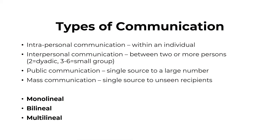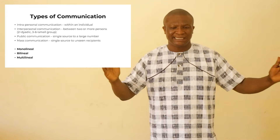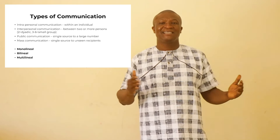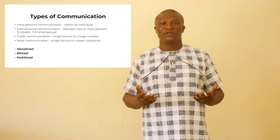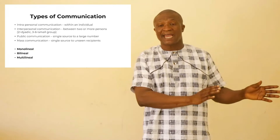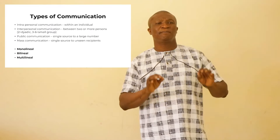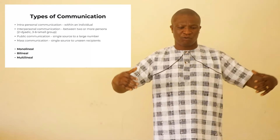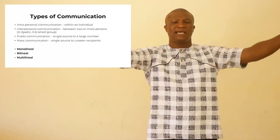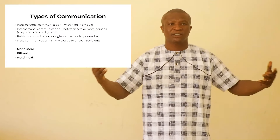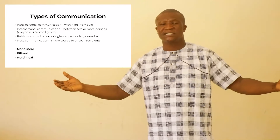Now let's look at the types of communication. We have basically three or four types. The first is intrapersonal — communication within an individual. Then we have interpersonal communication, which takes place between two or more people. When it is between two people, we say it is dyadic communication. It can also be between three to six people, and that is small group communication. Then we have public communication, where one person delivers a lecture or addresses a large group — like a lecture hall, a church service, or a political rally.